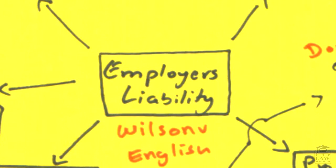In Wilson and English, we see several components being considered to determine what liability must be imposed in relation to an employer. There is a lot of statutory authority in this area as well, and we'll look at them as and when we get to it.